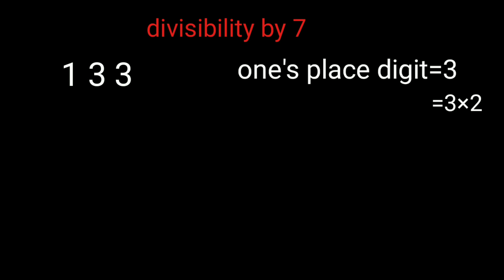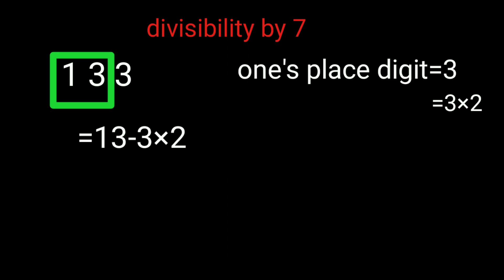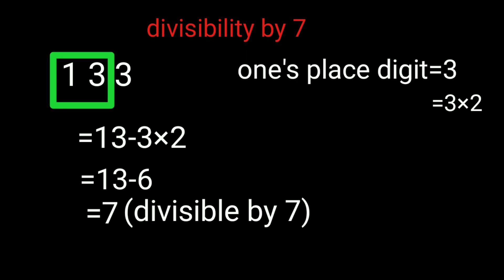Check divisibility by 7. Use the oscillator. Example: 133. The ones place digit is 3. The oscillator value for 7 is 2. Multiply: 3 into 2. The rest of the number is 13. Subtract: 13 minus 3 into 2 equals 13 minus 6 equals 7. So 7 is divisible by 7, therefore 133 is divisible by 7.